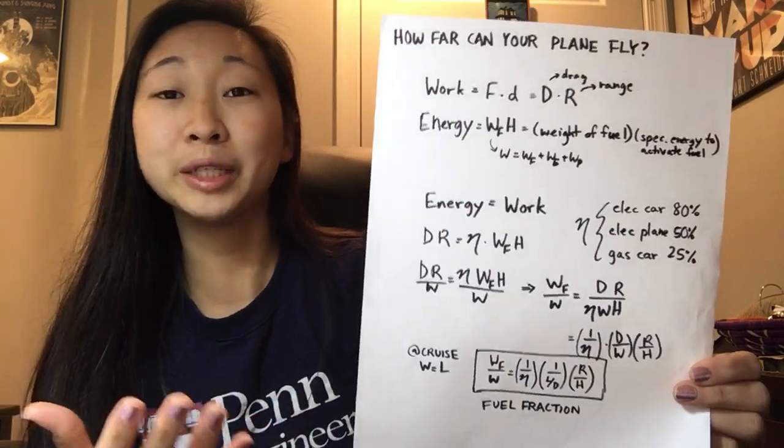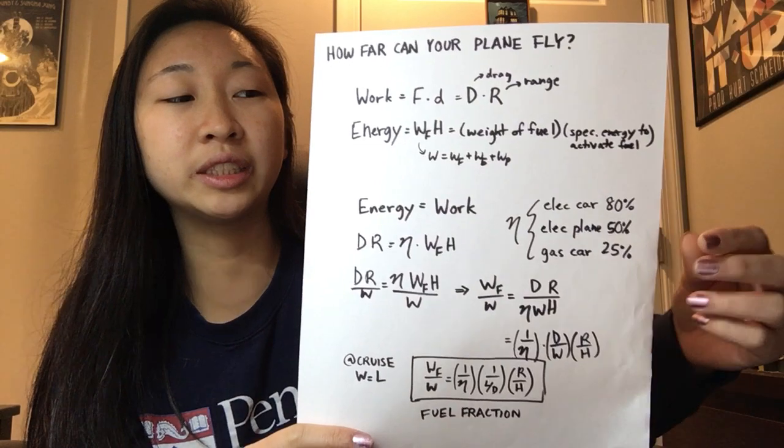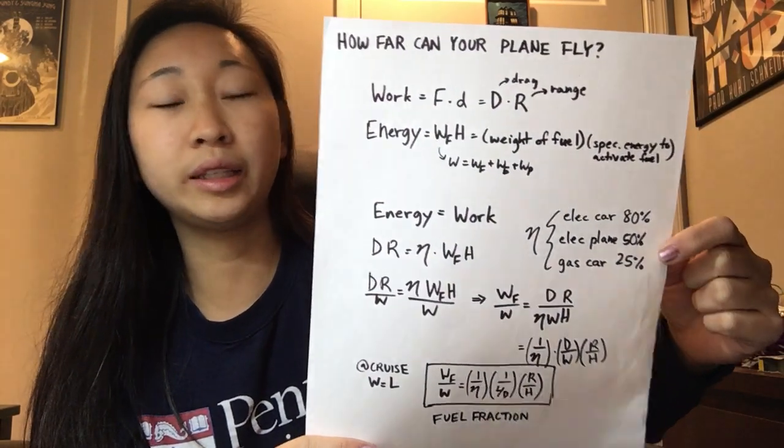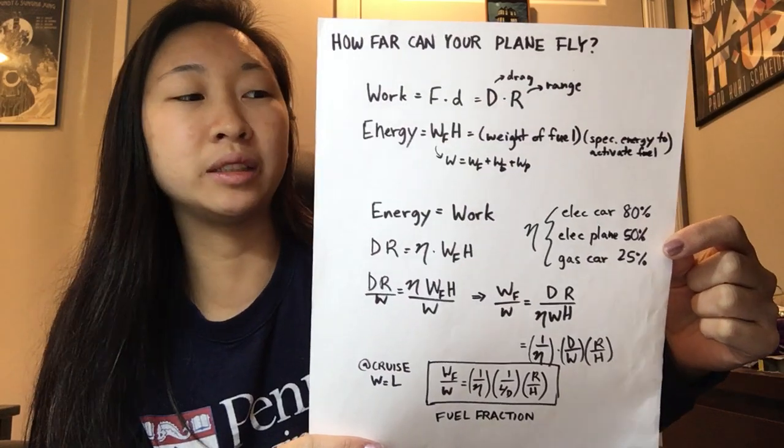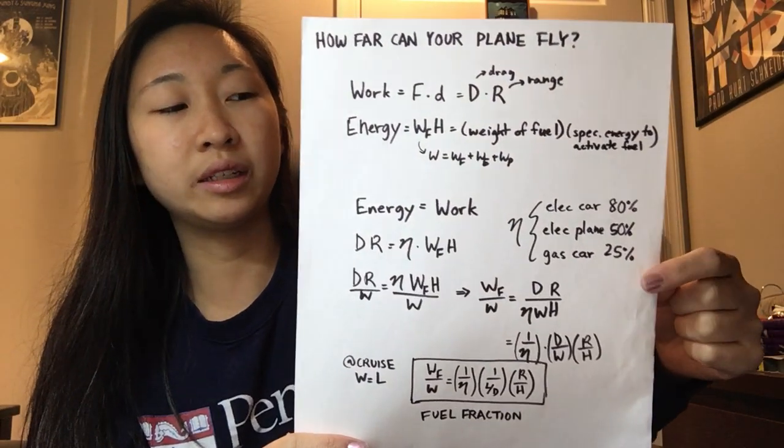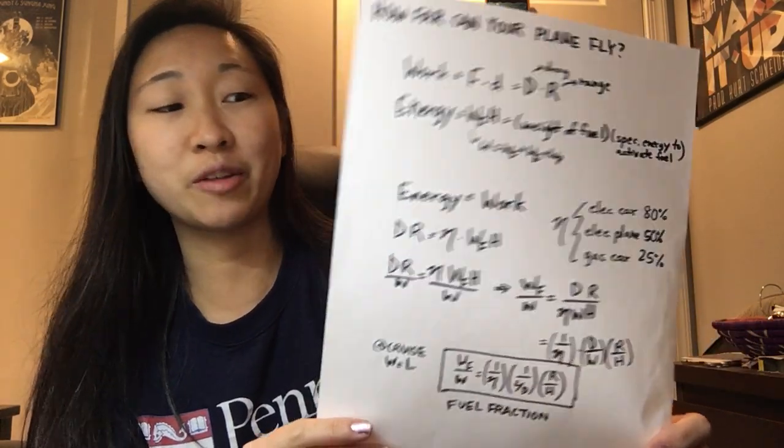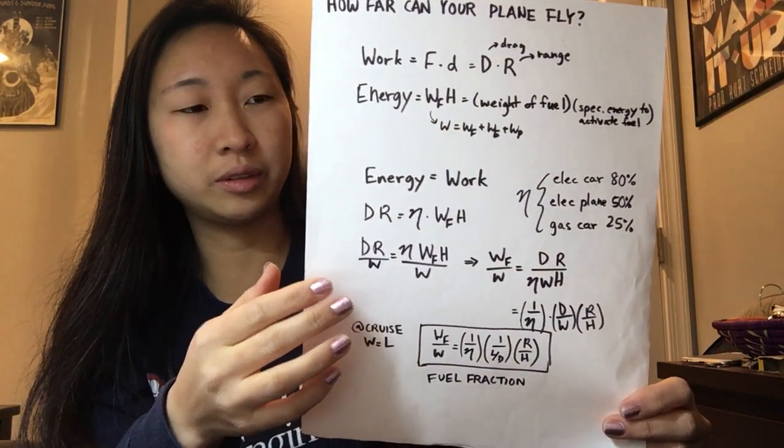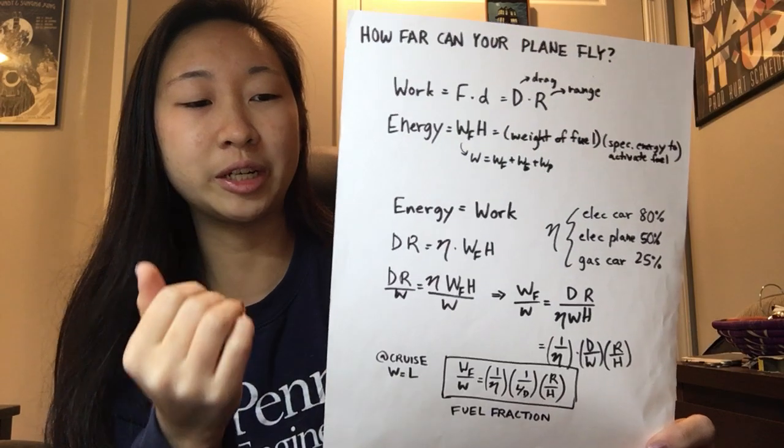So I wanted to give some benchmarks for the efficiency eta. Electric car, very efficient, about 80%. Electric plane, less efficient, but about 50%. And a gas car is the least efficient at like 25% for fuel to work conversion ratios.